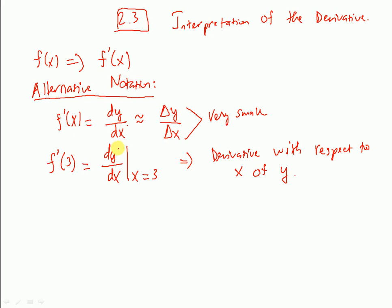So this notation represents the derivative of the function y with respect to x at the point x equals 3. Make sure that when you write dy over dx, this is not the same as x over y — you cannot cancel the d. The dy and dx come together to represent the derivative of y with respect to x.